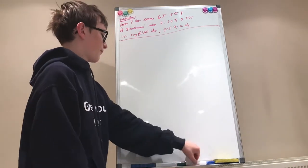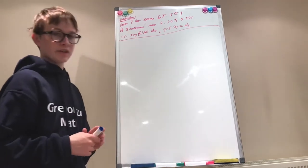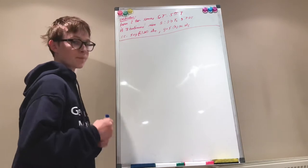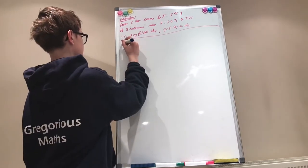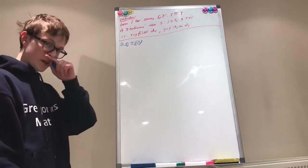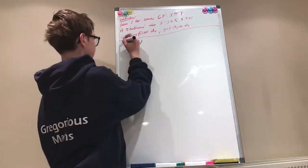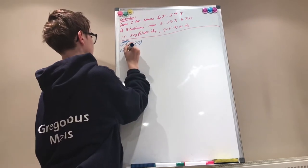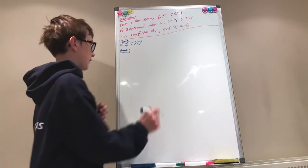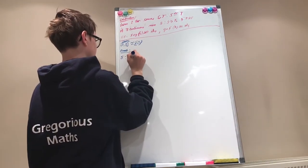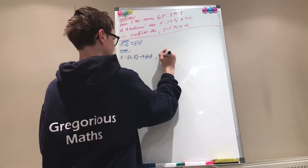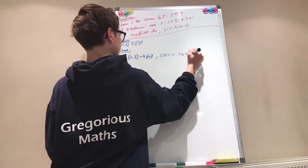Now let's look at an example which will also introduce the definition of what it means for a space to be contractible. If we have the closed interval between 0 and 1, is it homotopic to the single point {0}? We're going to have F, which takes you from the closed interval between 0 and 1 and just outputs 0, defined as F(x) = 0 for all x in [0,1].